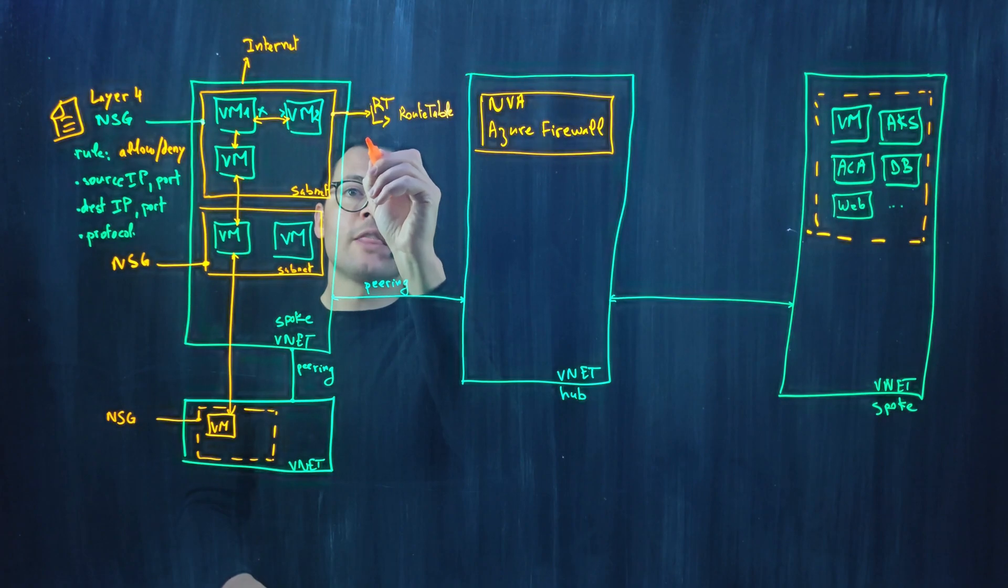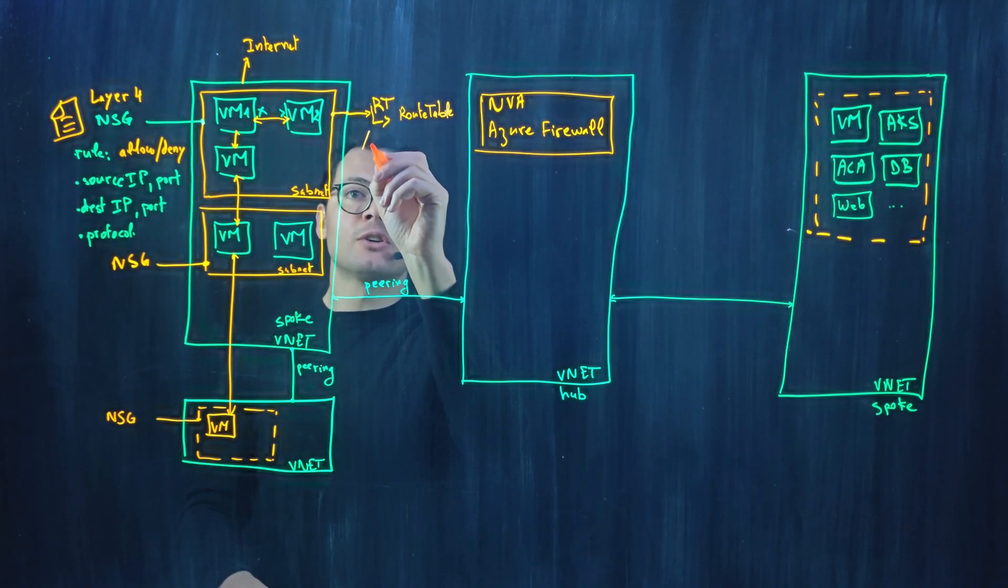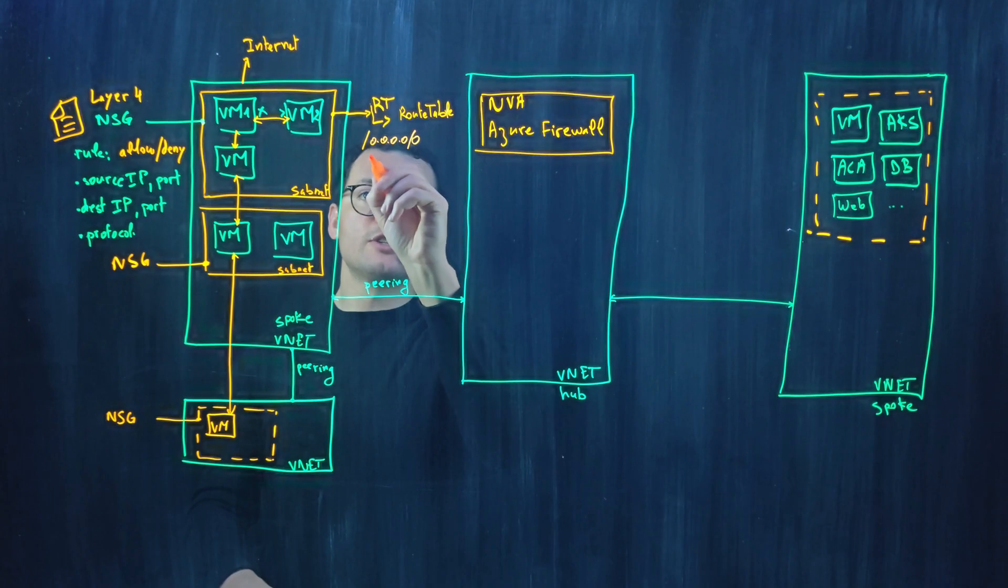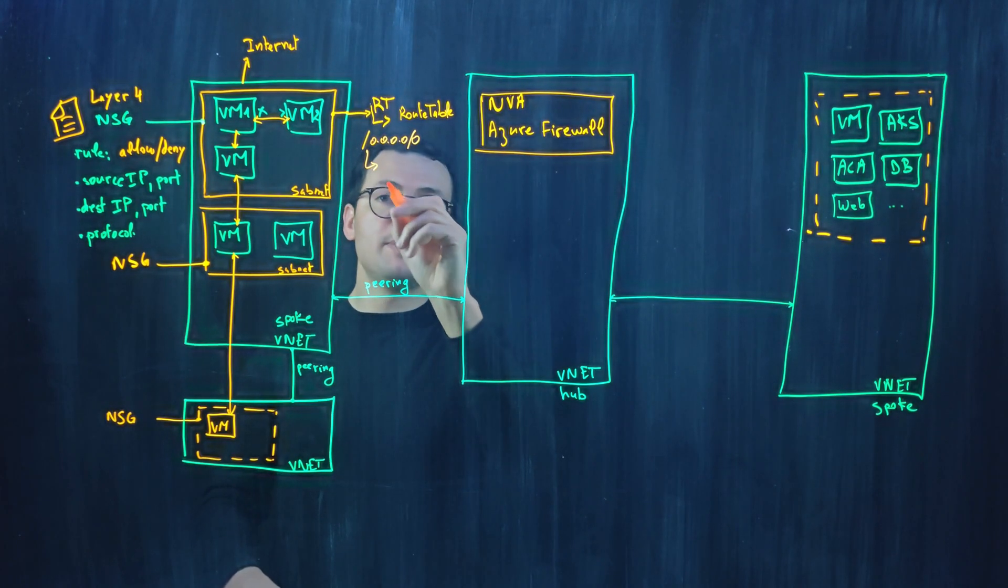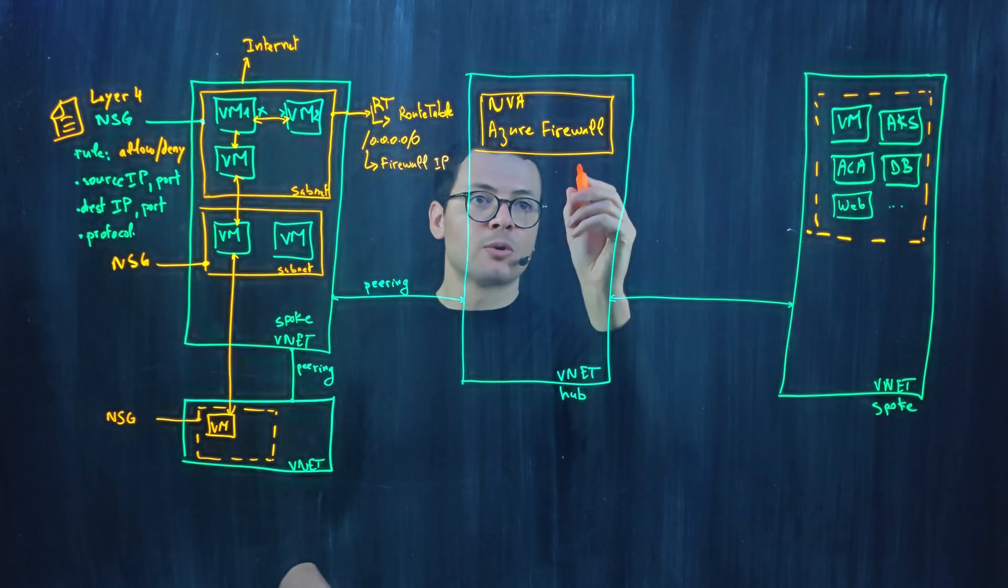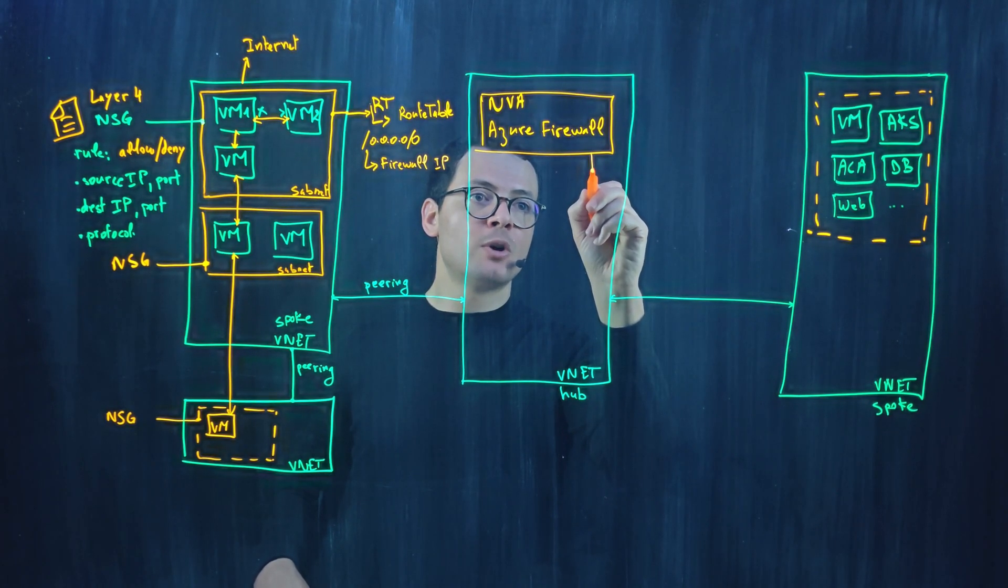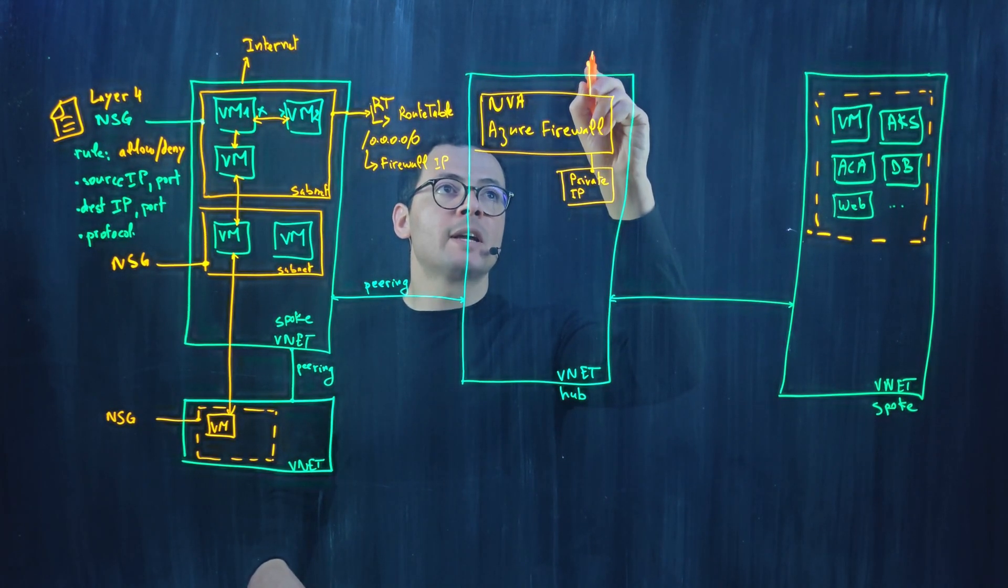And it will define a rule that will say, for example, filter or forward all the traffic 0.0.0.0/0 to the firewall IP address. Here, this firewall would have a private IP address within the network in addition to its public IP. We want to route all the egress traffic to that private IP address of that firewall.